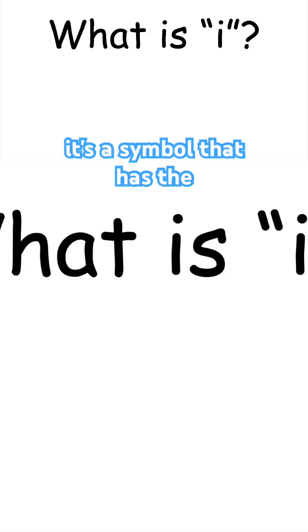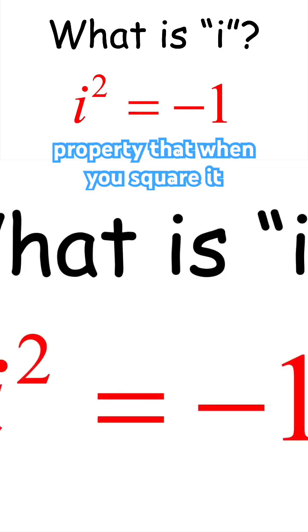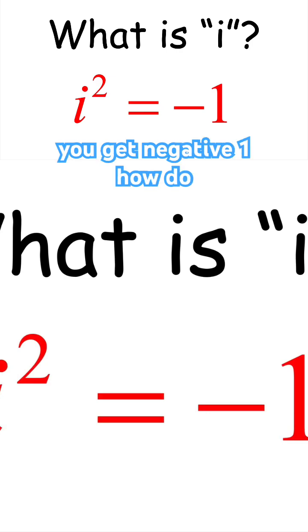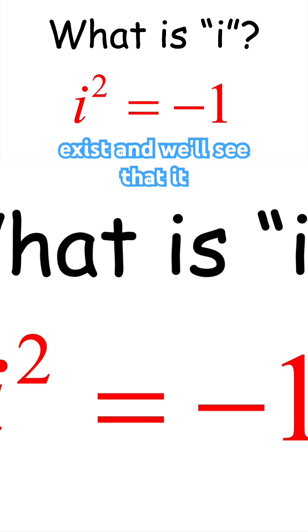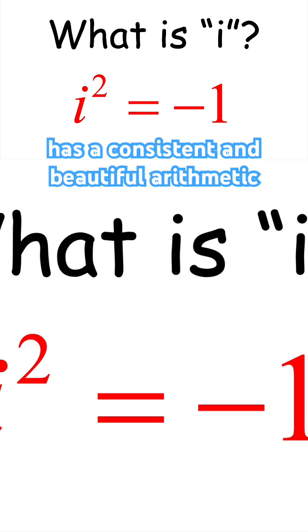What is i? It's a symbol that has the property that when you square it, you get negative 1. How do we know that such a number exists? We essentially define it to exist, and we'll see that it has a consistent and beautiful arithmetic.